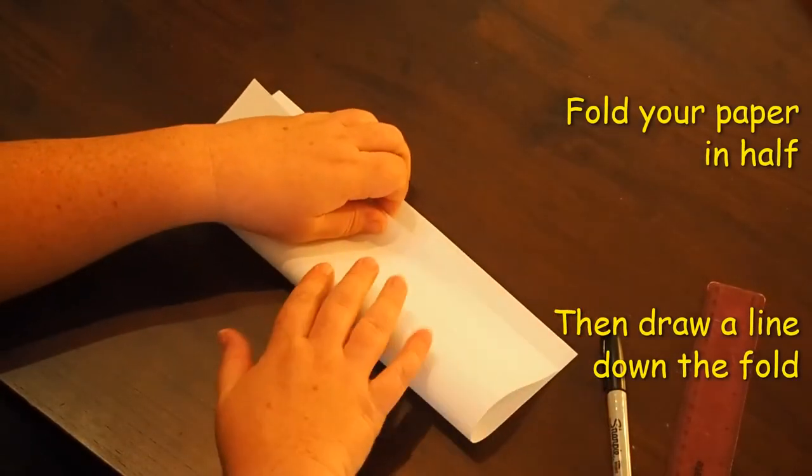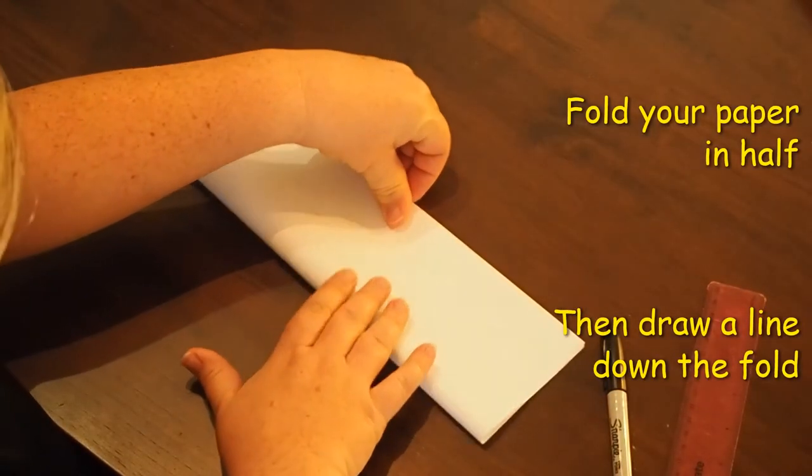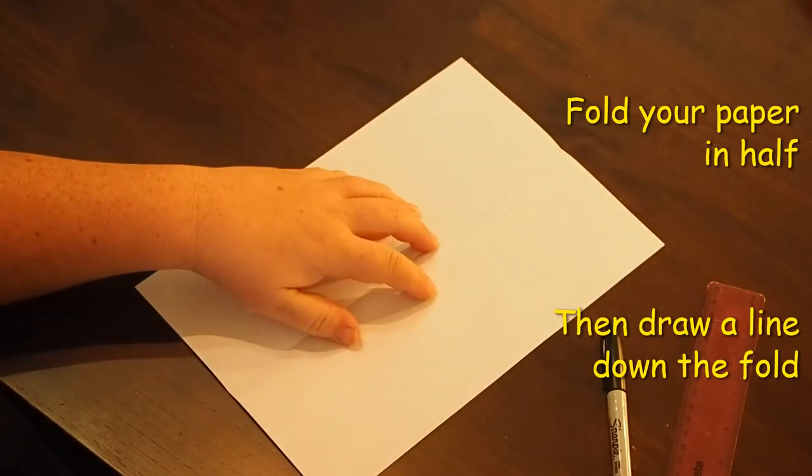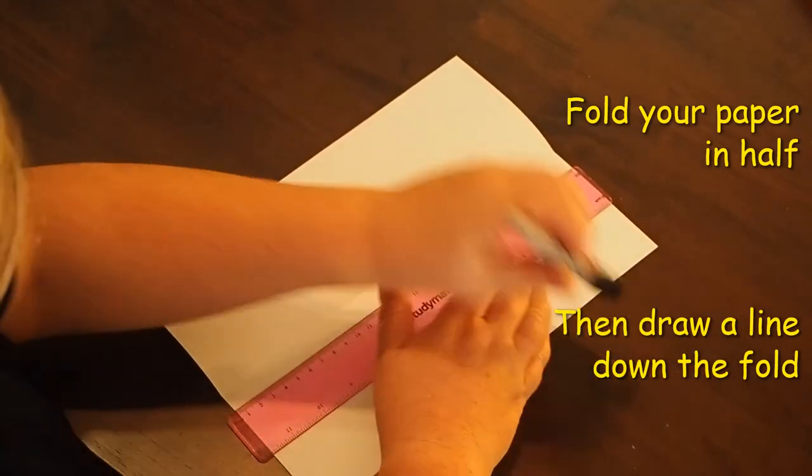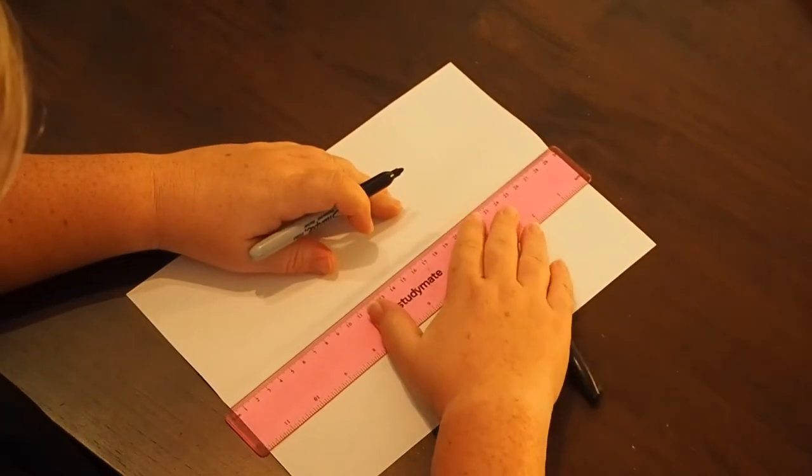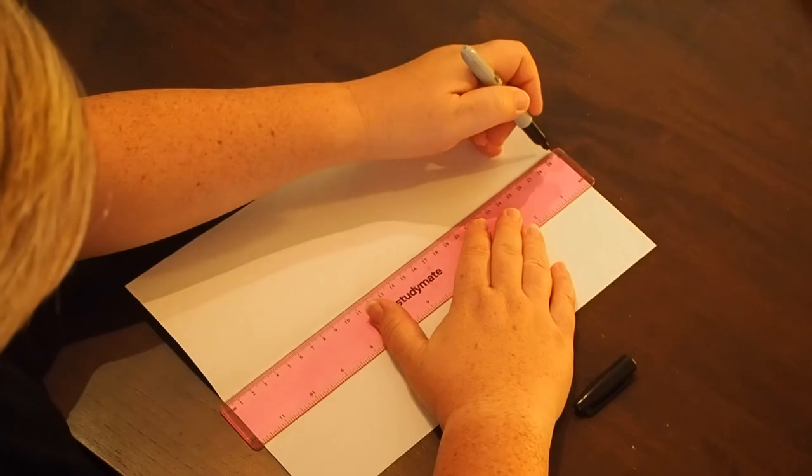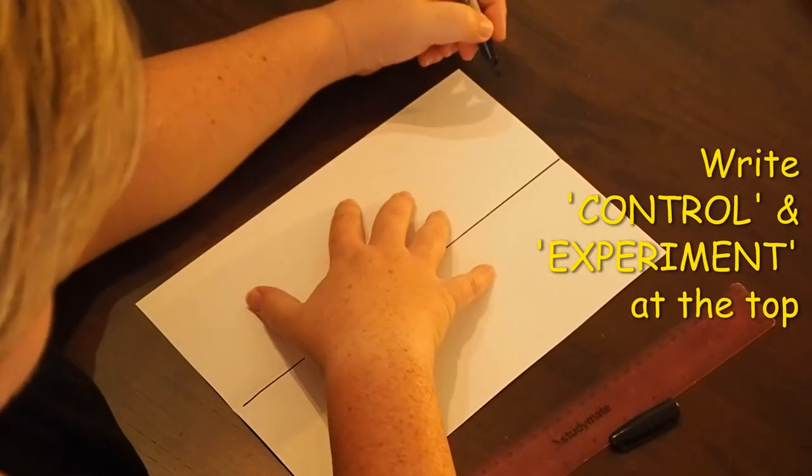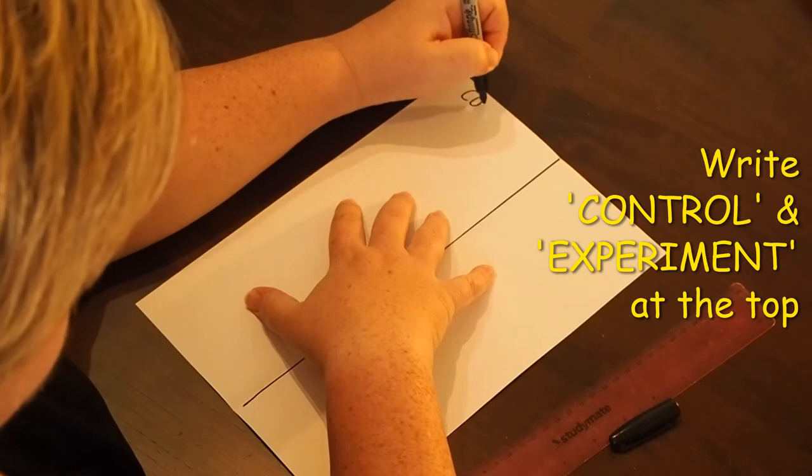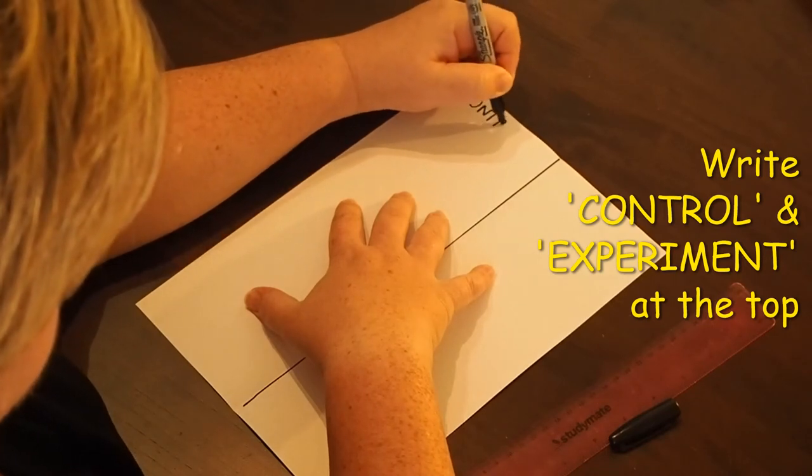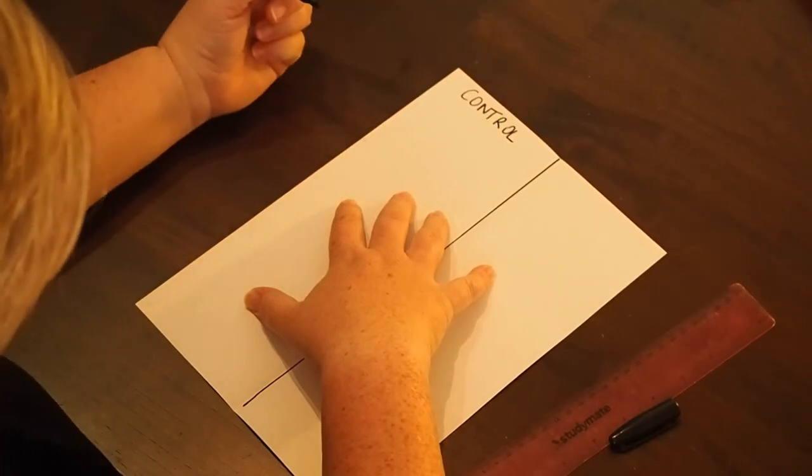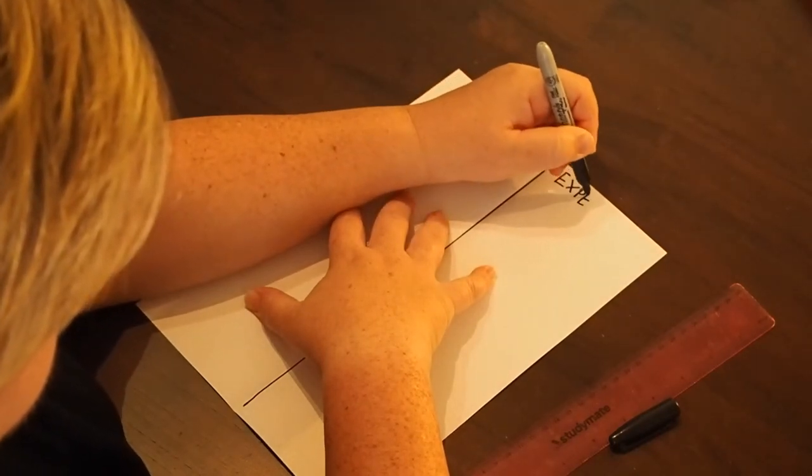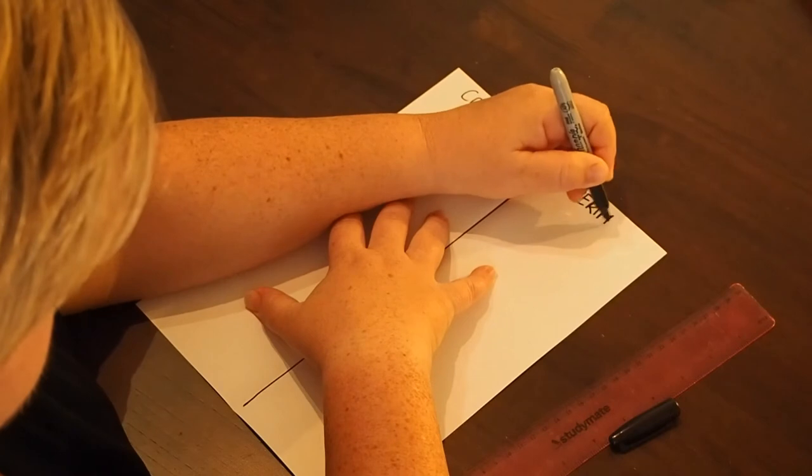Next, take your two pieces of A4 paper, fold them in half and then draw a line down the center. At the top of one half, write the word control. On the other half, write the word experiment. Do the same on both pieces of A4 paper.